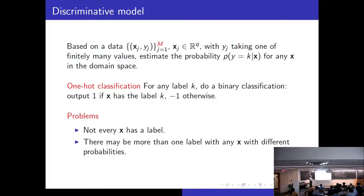There is something called one-hot classification. So for any label K, we are going to do a yes or no experiment. The output will be 1 if it has label K and minus 1 otherwise. We will estimate this probability and then find out which is the largest probability.